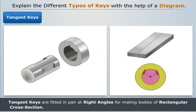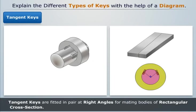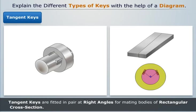Tangent keys are fitted in pairs at right angles for mating bodies of rectangular cross section. Each key has one inclined side face whose taper ranges between 1:60 and 1:100. With inclined surfaces turned towards each other, the keys are driven into inclined key slots and hub keyways. Each key withstands torque in one direction only.